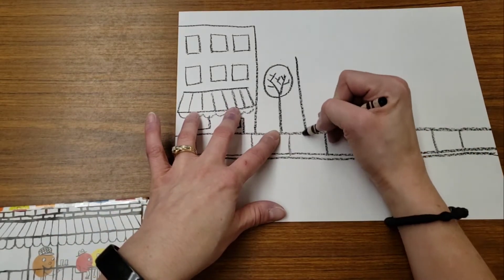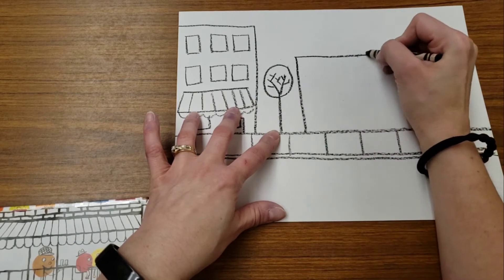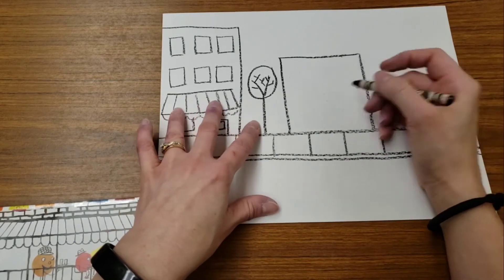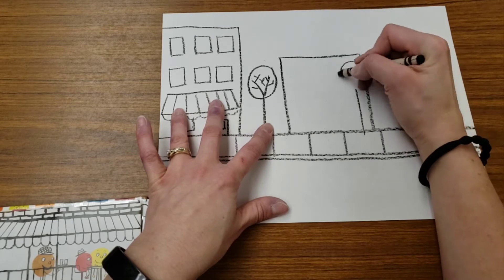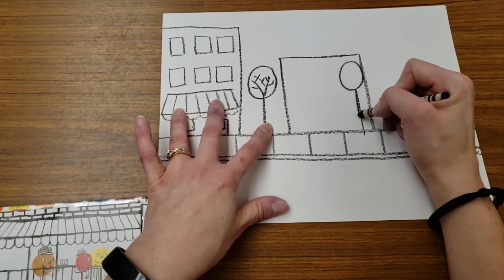I can add some other buildings. They can be different sizes. You can always have a tree in front of the building. Notice it's touching the sidewalk.